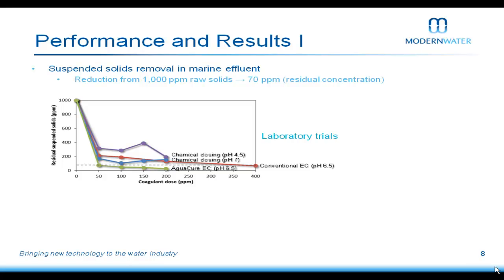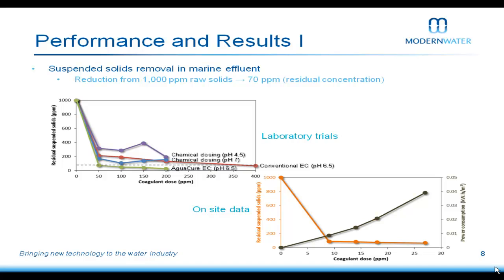When we ran the wastewater through our Agwacure EC system, we hit target at just 50 ppm, with results continuing to improve as coagulant dose increased. In terms of power and energy consumption, there is always a trade-off: at 10 ppm coagulant dose, power consumption is low, but increasing above 25 ppm raises power consumption while reducing residual TSS. The balance between sufficient coagulant dose and power consumption is a key consideration.